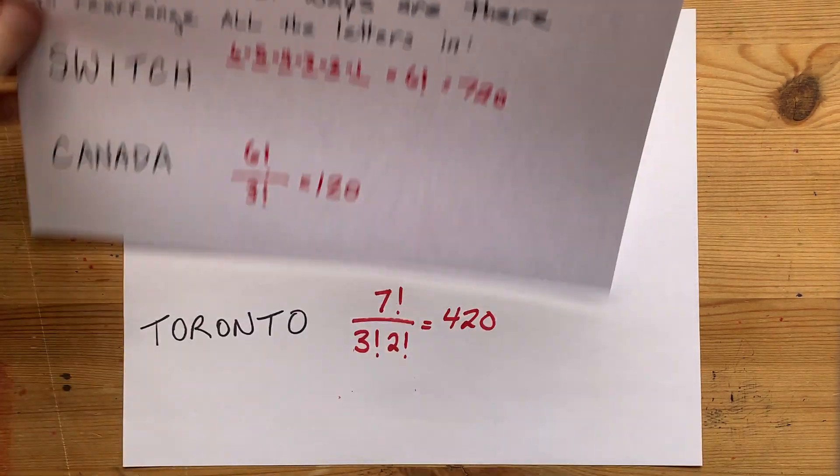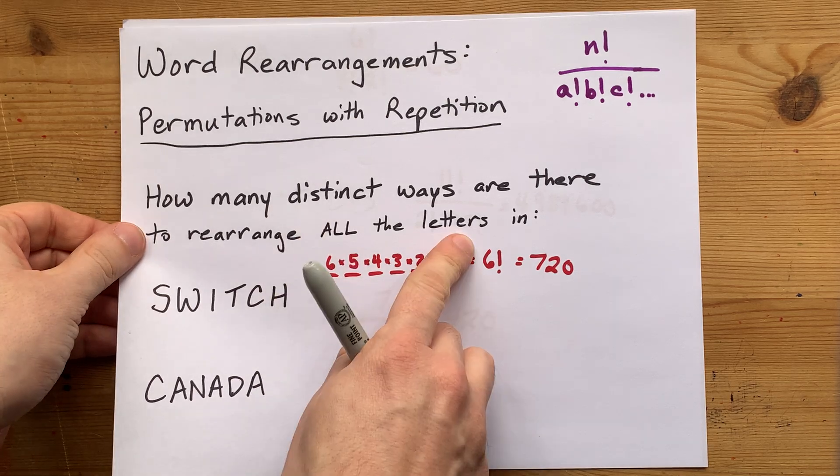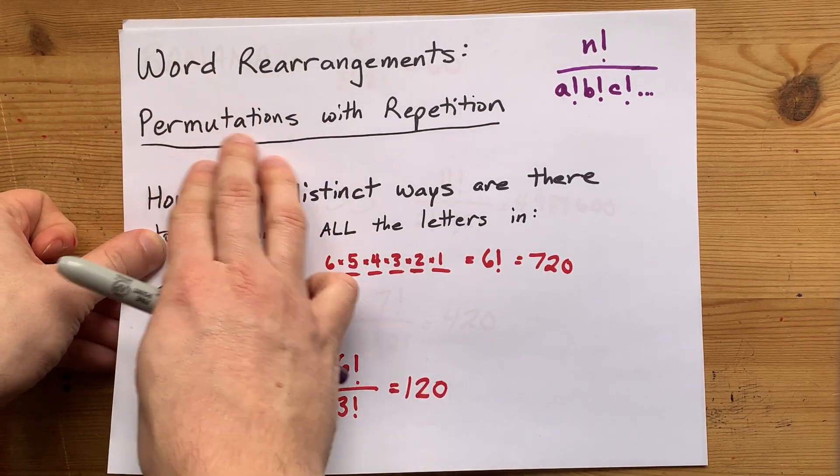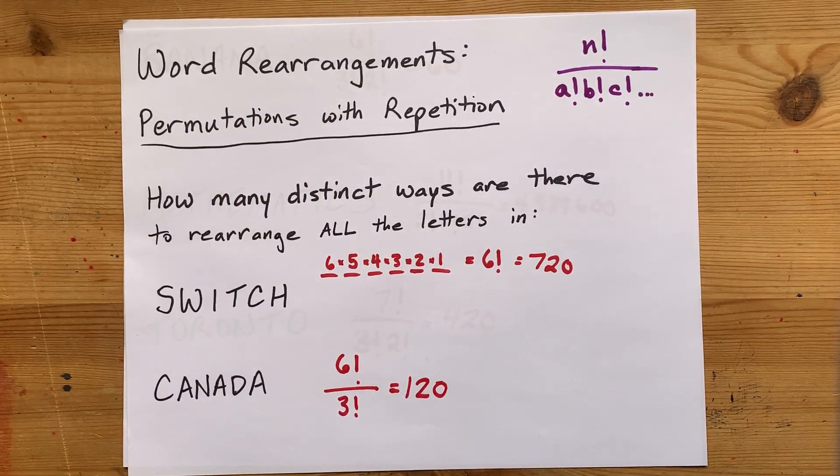Not too bad. There's five examples on distinct ways to rearrange all of the letters in a word. Some teachers call that permutations with repetition. Thanks for being with me, and best of luck.